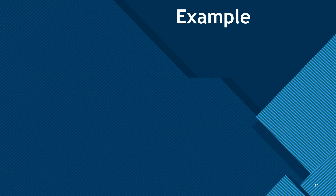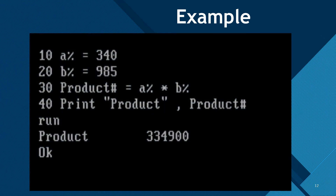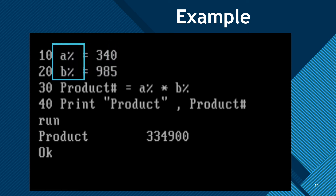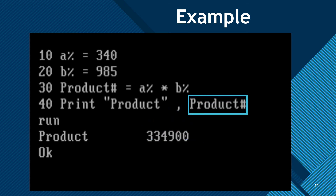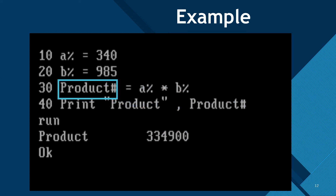In the previous example, we stored two numeric constants in two numeric variables, and their product is also saved in a numeric variable because it is also a number.